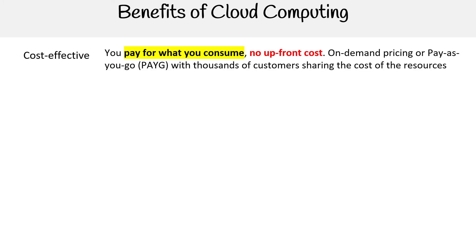The first benefit is that cloud computing is cost effective — you pay for what you consume, there's no upfront cost. The idea is on-demand pricing, or pay-as-you-go. AWS calls it on-demand, Azure calls it pay-as-you-go — two different ways of saying the same thing. You have thousands of customers sharing the cost of resources. When we looked at cloud hosting, we saw that more than one customer shares the same machine, so you don't have to pay for the entire machine.